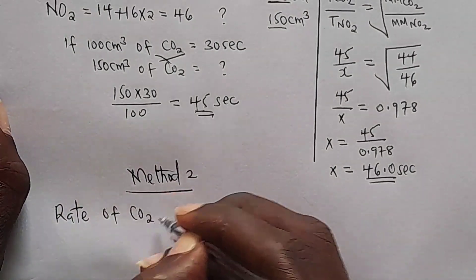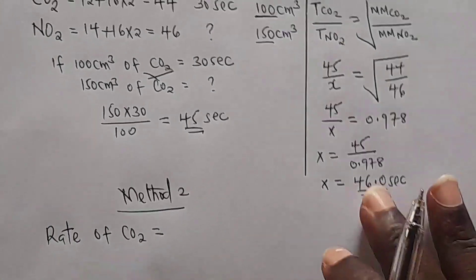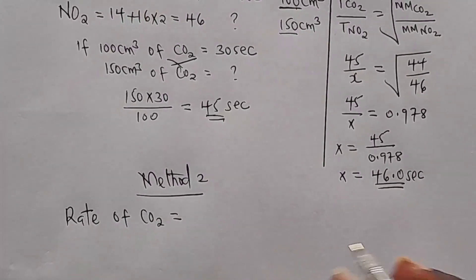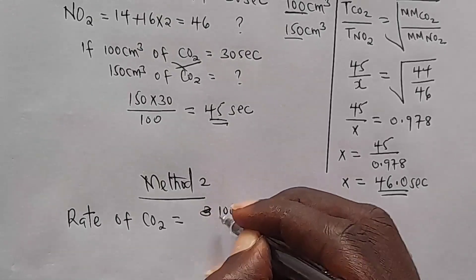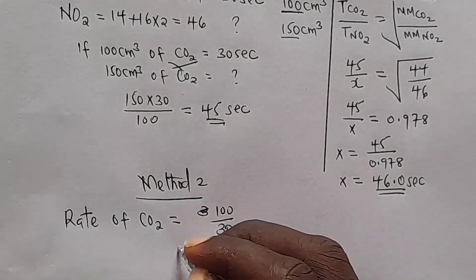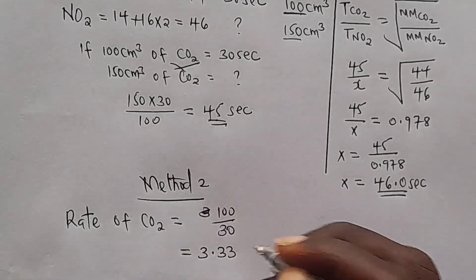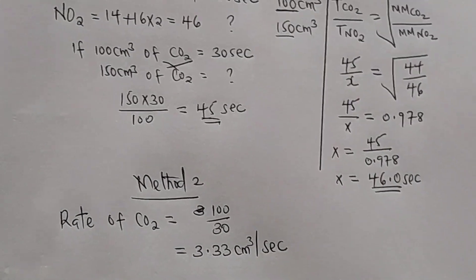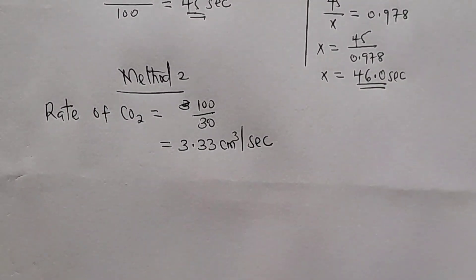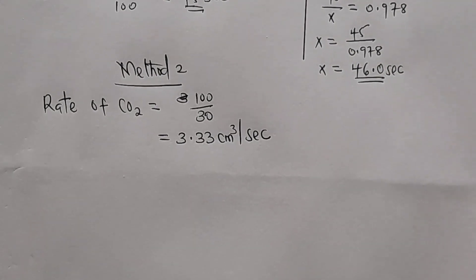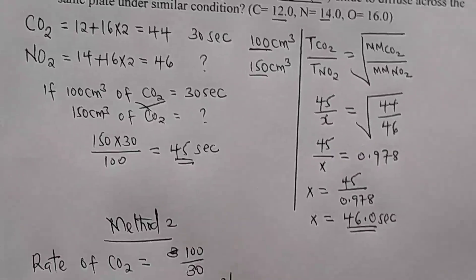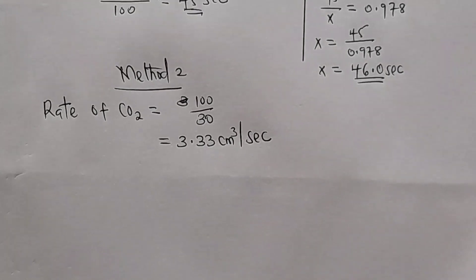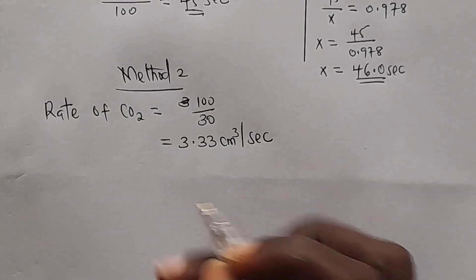Rate of carbon dioxide: rate is given by volume divided by time. The volume of CO₂ is 100 cm³ and the time is 30 seconds, so the rate of carbon dioxide equals 100 ÷ 30 = 3.33 cm³ per second. For nitrogen dioxide we don't have the rate because we only have volume = 150 cm³ but no time. So we take the rate of nitrogen dioxide as x.